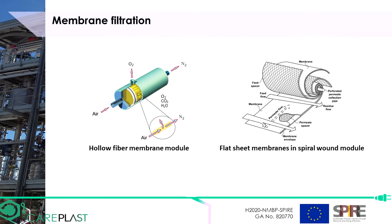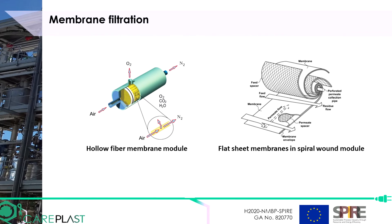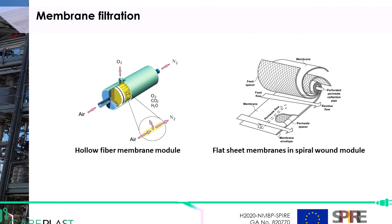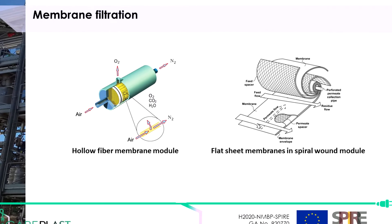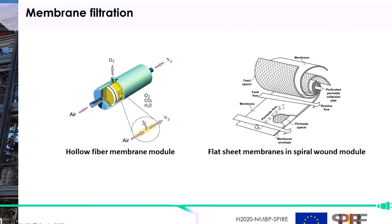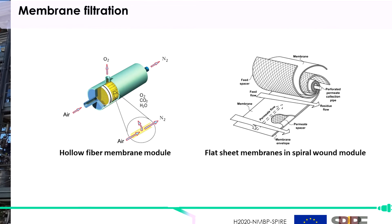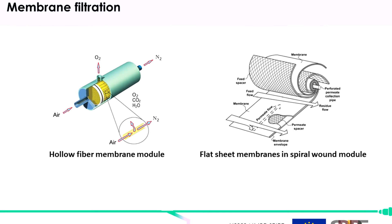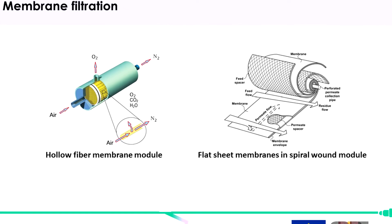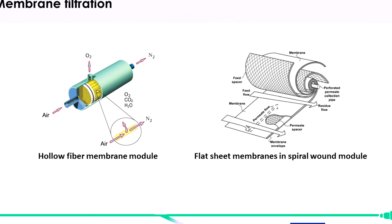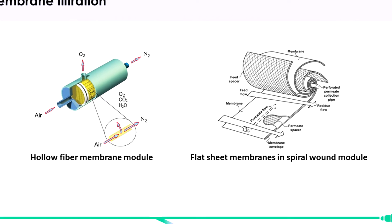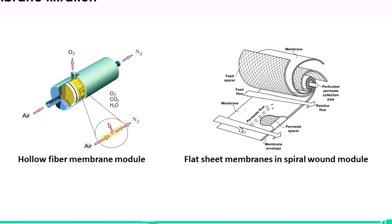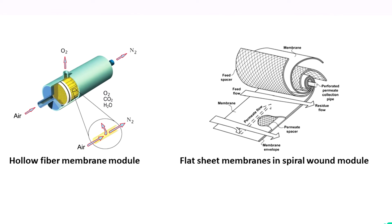There are two main types of membranes. Hollow fiber membranes, which essentially are straws with on one side the feed and on the other side the permeate — these can generally be operated both inside-out and outside-in. And second, flat sheet membranes. These flat sheets are rolled into spiral wound modules, allowing for a large amount of membrane surface area to be packed in a small volume.